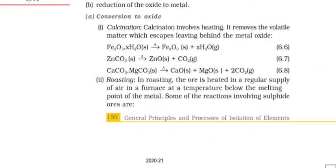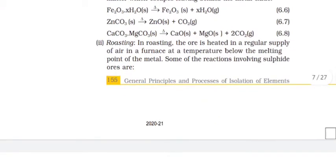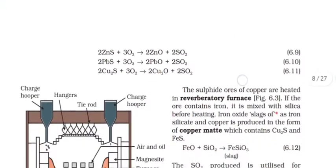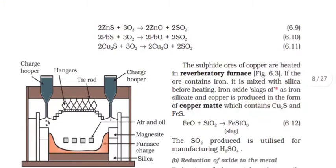Roasting. In roasting, the ore is heated in a regular supply of air in a furnace at a temperature below the melting point of metal. Some of the reactions involving sulfide ores are 2ZnS plus 3O2 gives 2ZnO plus 2SO2.